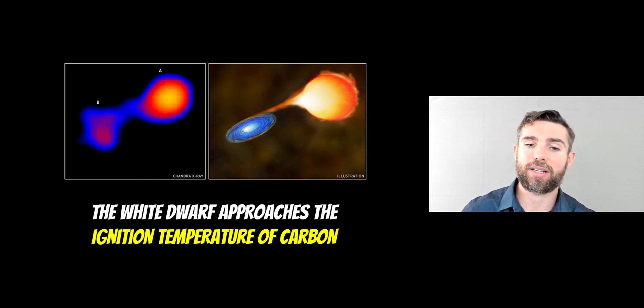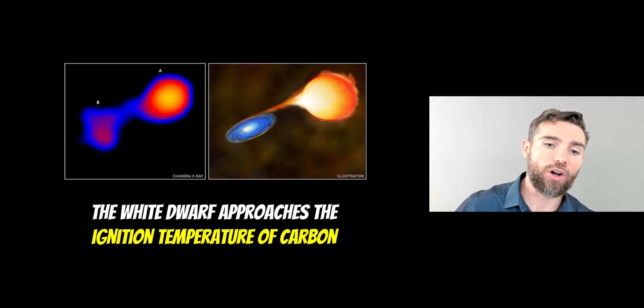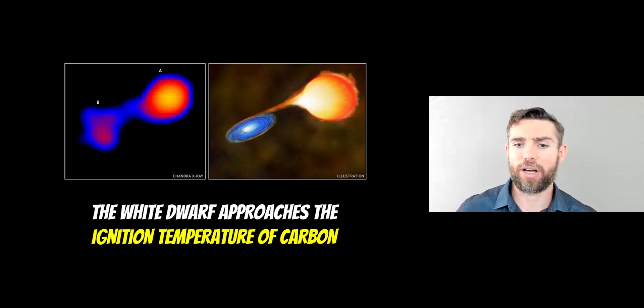So once it approaches that critical mass, it gets to the ignition temperature of carbon. Now why is it important that it's the ignition temperature of carbon? Well, white dwarf stars are basically the leftover core of a main sequence star a bit like the sun. Once the sun's gone through its evolutionary phase, gone red giant, it loses those outer layers and you're left behind with that really hot central core which is predominantly carbon. So once it reaches the ignition temperature of carbon, then the entire white dwarf star is going to ignite, essentially in a thermonuclear explosion.